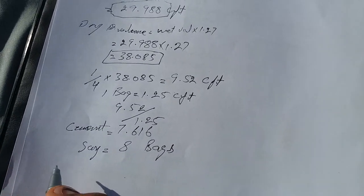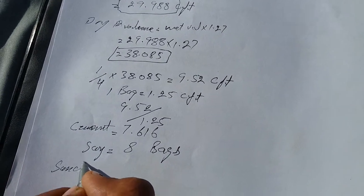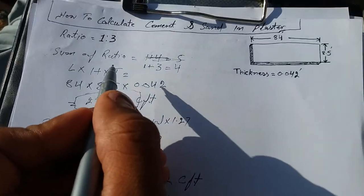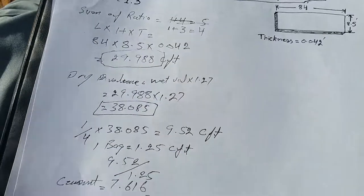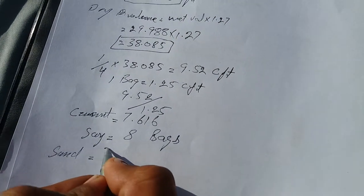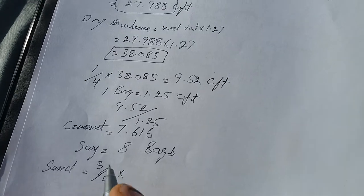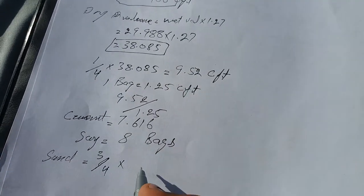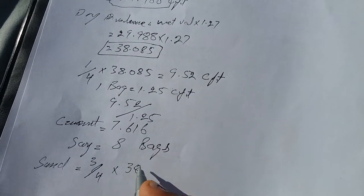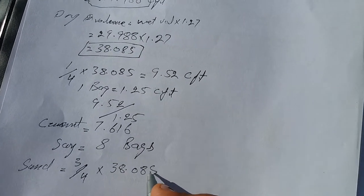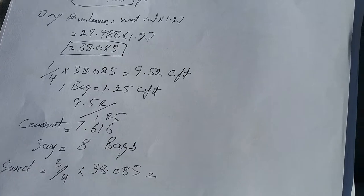Second, we take out the quantity of sand. In the ratio we have 3, so 3 divided by 4 multiplied with dry volume 38.085.